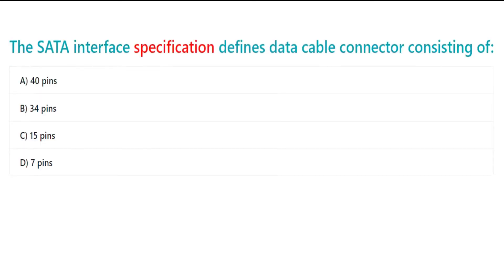The SATA interface specification defines a data cable connector consisting of: A. 40 pins. B. 34 pins. C. 15 pins. D. 7 pins.